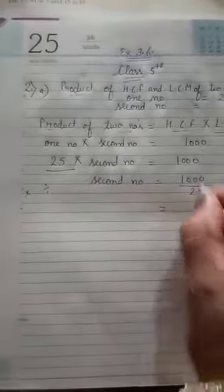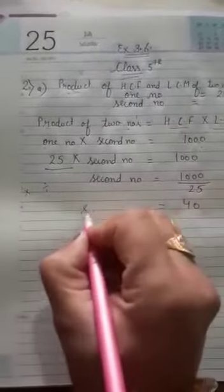When we change side, then multiply change into divide. Divide 1000 by 25. When you divide, then our answer came 40.